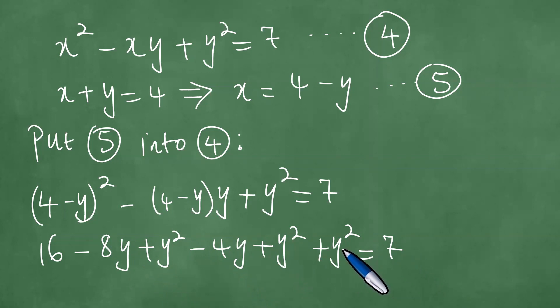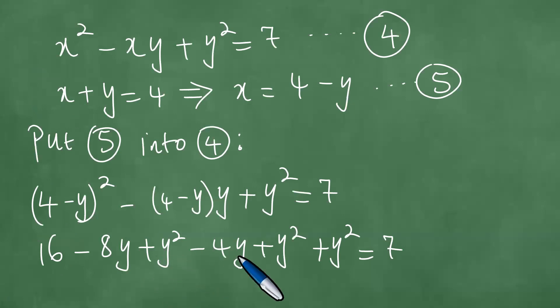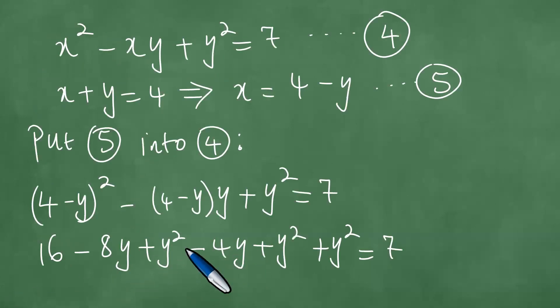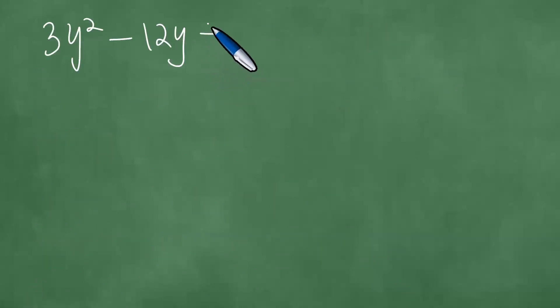This gives us three y squareds. So we proceed to then say we shall have 3y squared. Then you have the minus 4y and the minus 8y, together they give us minus 12y, and we have the constant terms, so 16 minus 7 giving us plus 9.